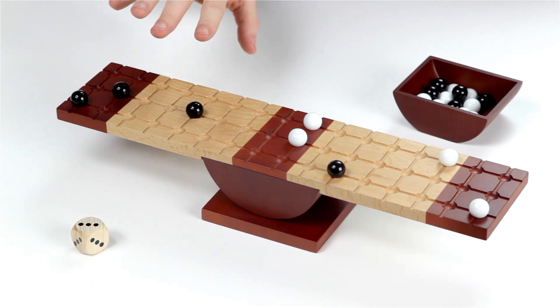So let's say black rolls a three. They can divide up their move into any of the marbles in any direction. So let's say black decides to move this marble one space and this marble two spaces.